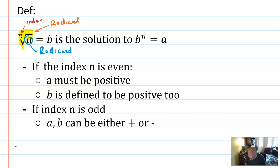If the index is even, so I'm doing a fourth root of 2,312, that's probably not a nice number, but there's a couple rules. If the index is even, a must be positive. And also the answer, right? So when we say b, we mean the answer, is also going to be defined to be positive.